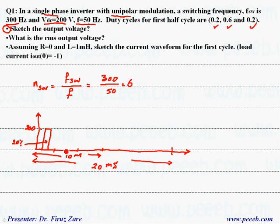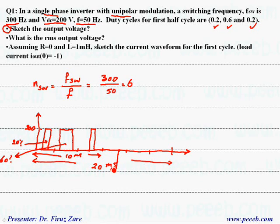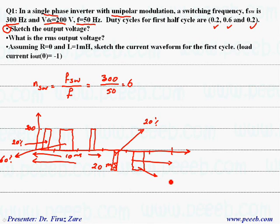The second duty cycle is 0.6 or 60%, so it is wider. The next one is 20% again. Because we are generating AC voltage, we have almost the same duty cycles due to symmetry for the next three switchings, but the output voltage should be negative. So again, D2 cycle is 20%, then 60%, and then 20%.